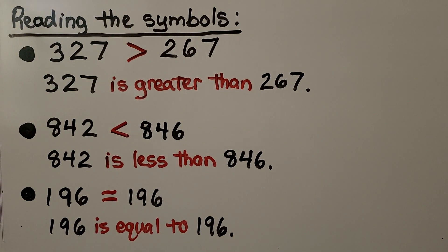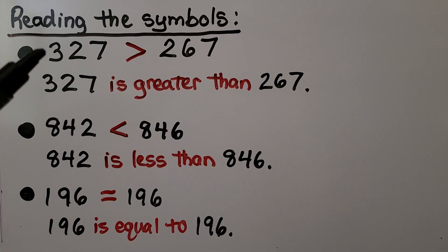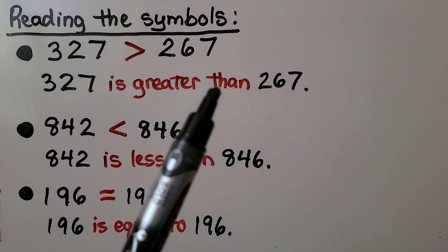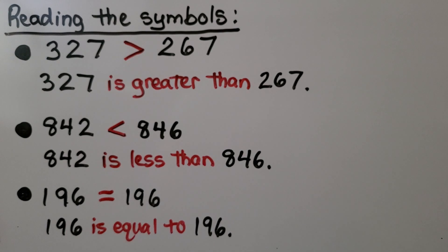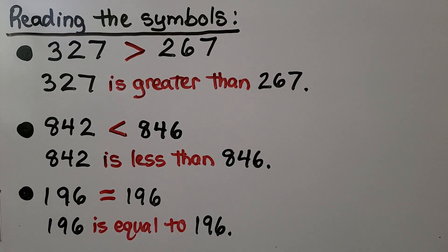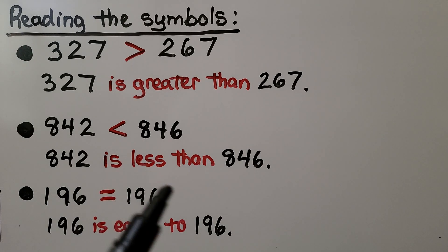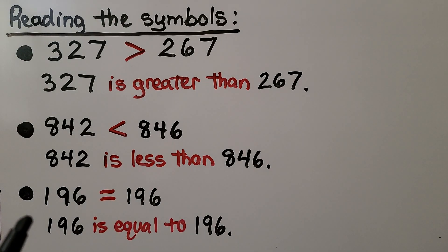Reading the symbols: 327 is greater than 267. Here we have 842 is less than 846. And 196 is equal to 196.